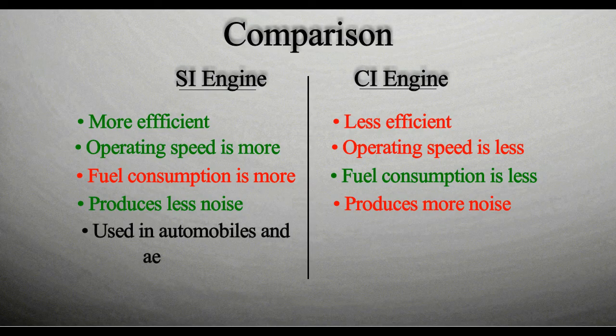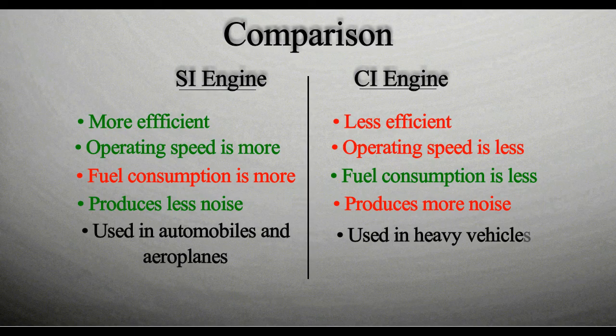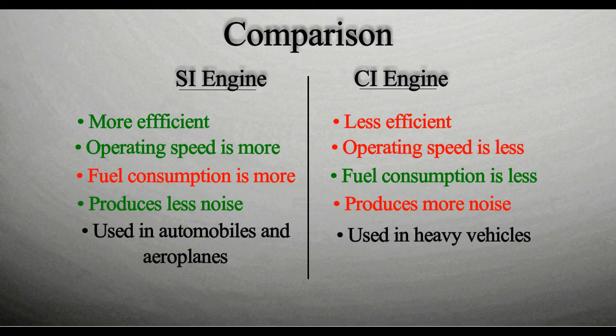SI engines are used in automobiles and aircraft, and CI engines are used in heavy vehicles such as buses, lorries, and trucks. Both spark ignition and compression ignition engines have their own merits, demerits, and applications.